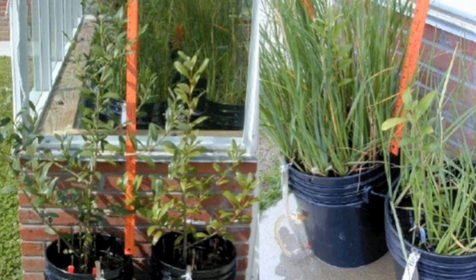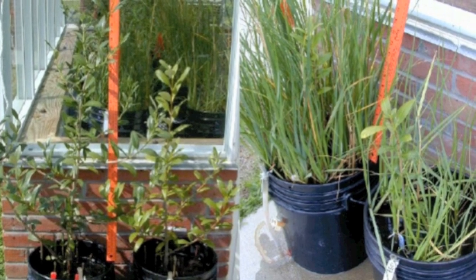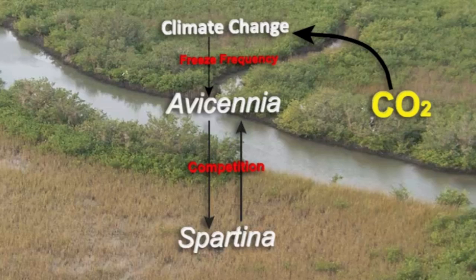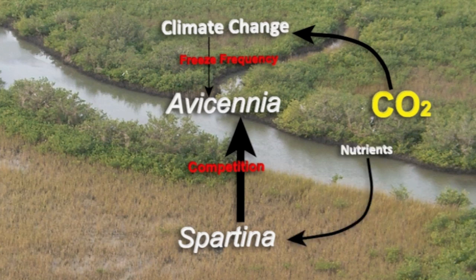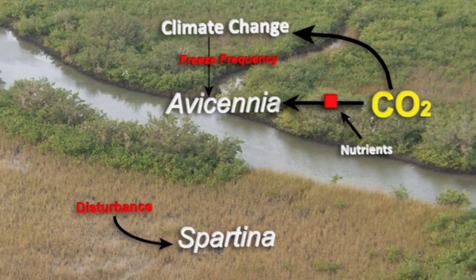Note that if we had only examined the growth of the two species separately and not in mixture, we would have come to a different and incomplete conclusion. This information allows us to modify our conceptual model to show that when Spartina is present and healthy, it strongly suppresses Avicennia recruitment, and higher nutrients enhance Spartina, perhaps further suppressing Avicennia. However, if Spartina is eliminated by a disturbance, then Avicennia's growth is enhanced by CO2, particularly where nutrient availability is high.